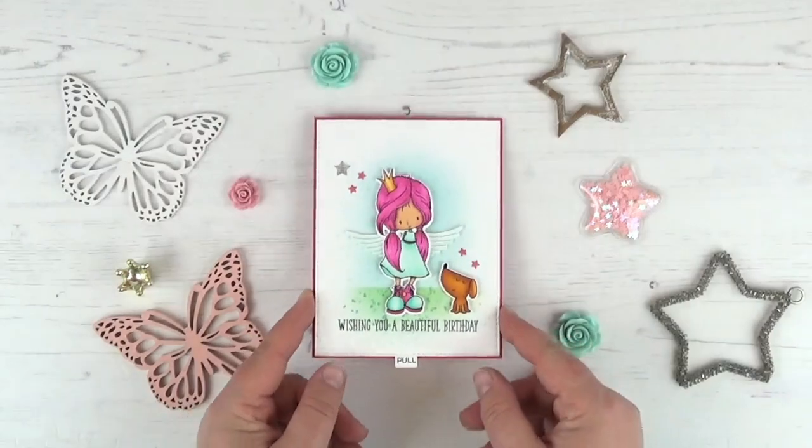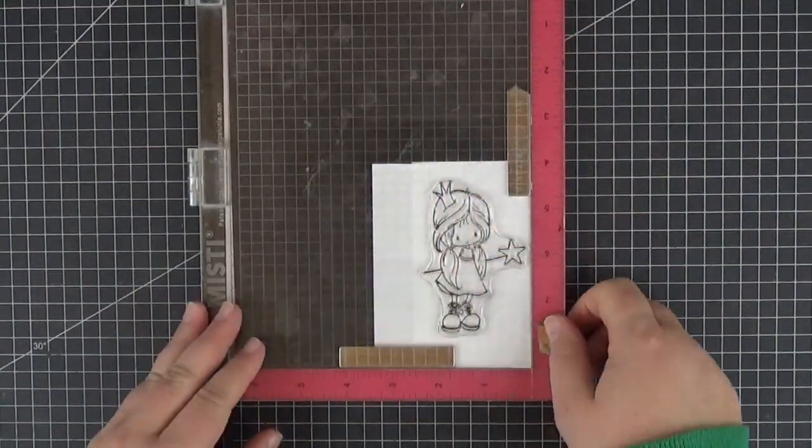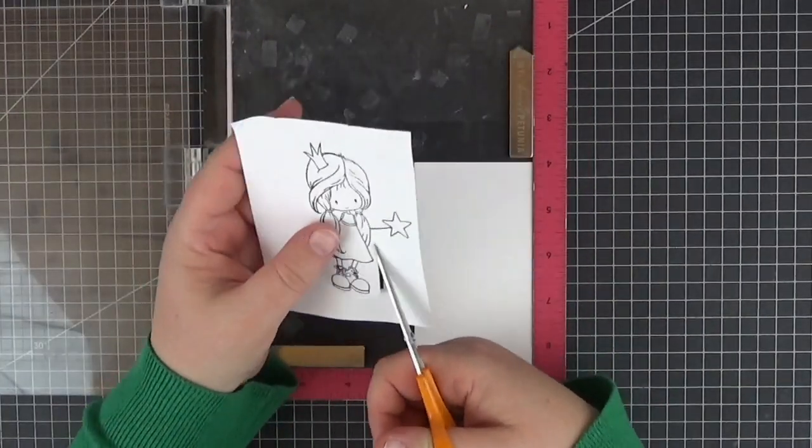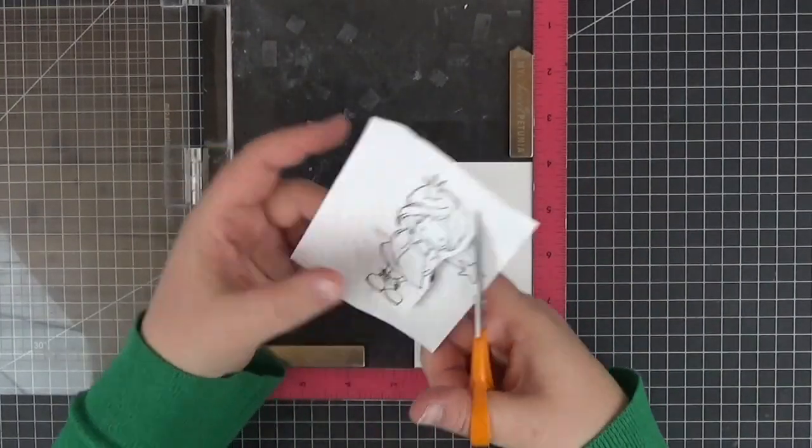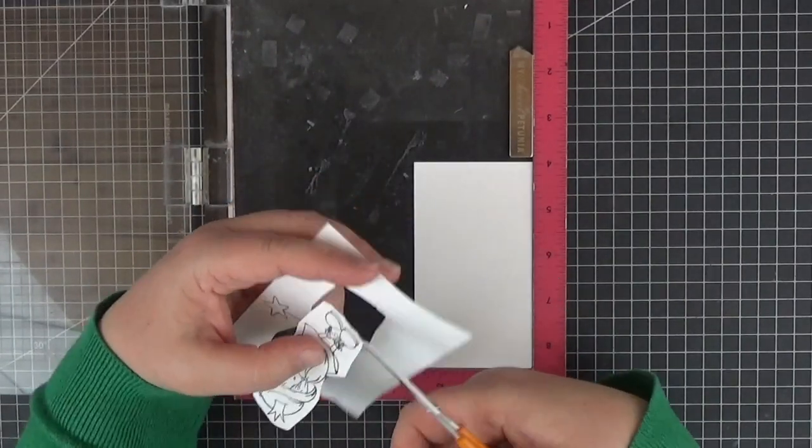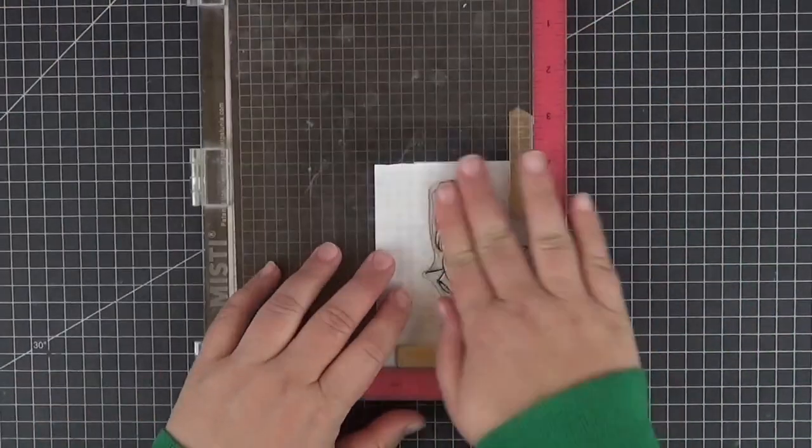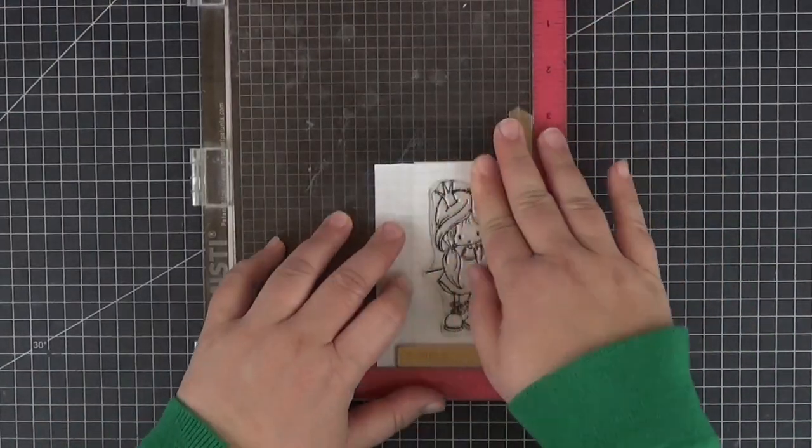I started by stamping her on a piece of printer paper with extreme black hybrid ink. Next I made a simple mask by cutting out everything that I wanted to transfer when stamping her a second time on Copic friendly paper. In other words I wanted to get rid of her magic wand.